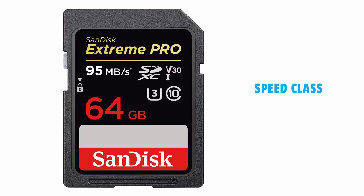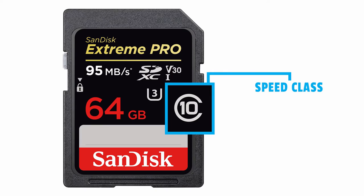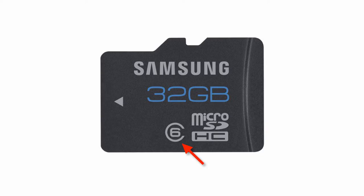Now let's talk about the next category: speed class, which is different from x-speed. Speed class is broken down into two types of icons you'll see on the card. The first looks like a letter C or a half circle with a number on the inside. This represents the minimum write performance, and it's more dedicated toward video recording. If you see the letter C with the number 10, that's the highest class — the fastest speed available. Class 10 is pretty common in most cards these days.